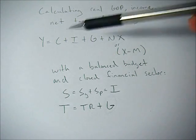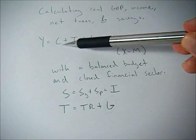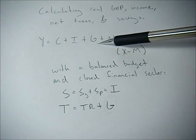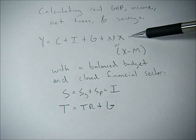So remember this equation, Y equals C, consumption spending, I, investment spending, G, government spending, plus NX, or net exports,